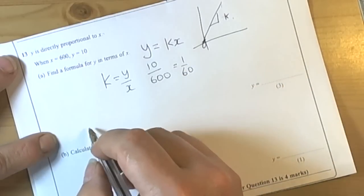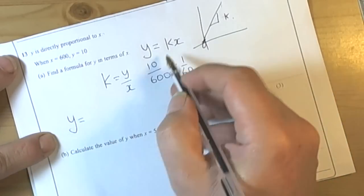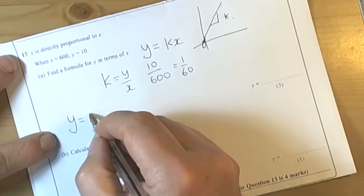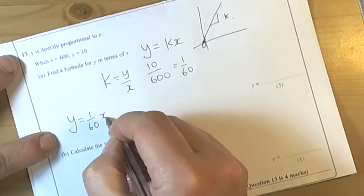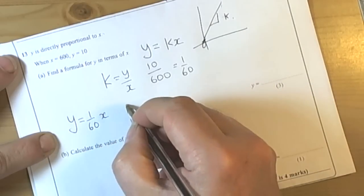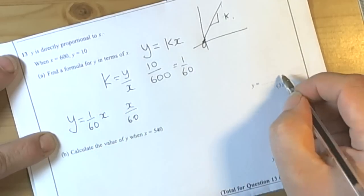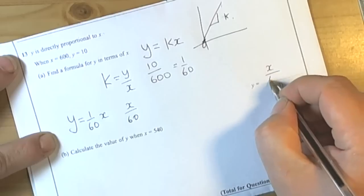So when they say find a formula, then we replace the k with the now found value. So it's 1/60th of x, or we could write x over 60. So y equals x over 60.